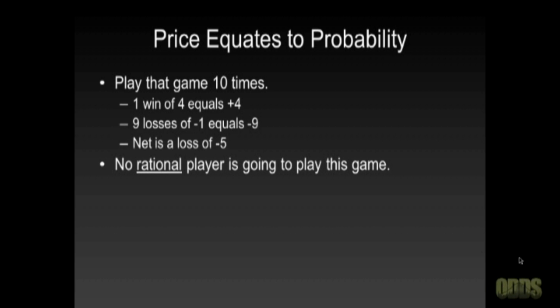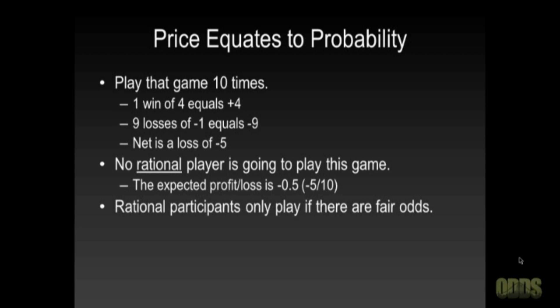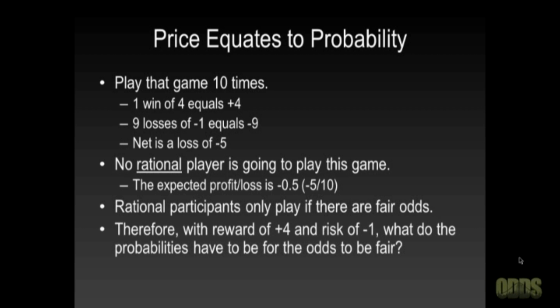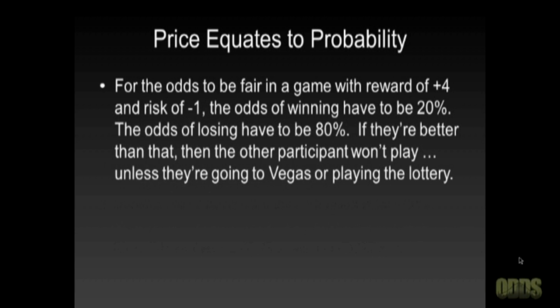No rational player is going to play this game. That's because the expected profit/loss is minus 0.5 — that's the average profit/loss for every game, and you get that by taking the net loss divided by the number of times you play. Rational participants only play if there are fair odds. So with a reward of 4 and a risk of 1, what do the probabilities have to be for the odds to be fair?